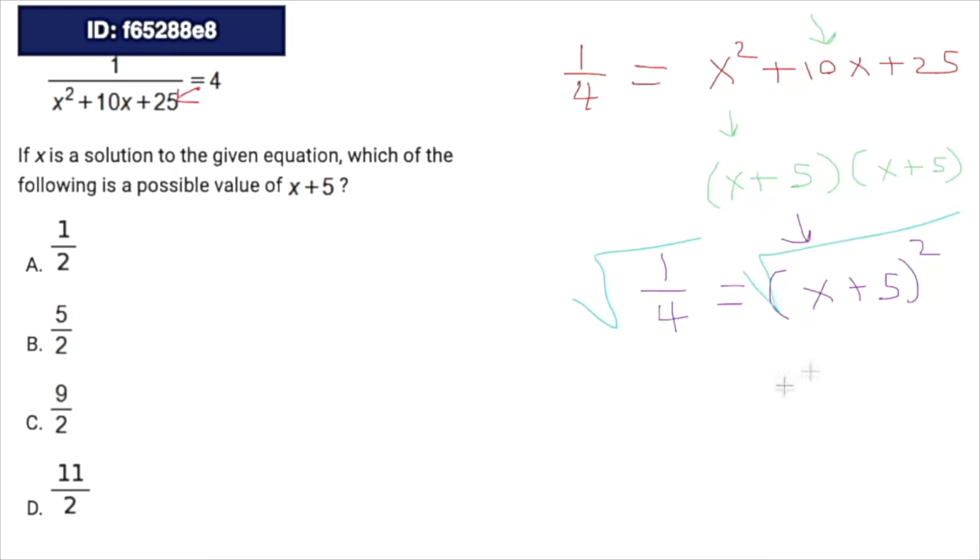So now we have 1 fourth equals x plus 5 squared, and we're actually trying to solve for x plus 5. So all we have to do is get rid of the square. How do we get rid of a square? We square root. So square root the left side, square root the right side. This obviously becomes x plus 5. That was our goal. And just remember when you square root a fraction, you're square rooting the top and the bottom. So the square root of 1 is 1, the square root of 4 is 2, and x plus 5 equals 1 half. So our answer is A.